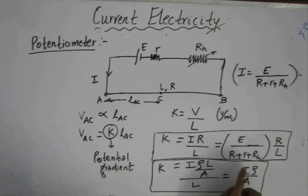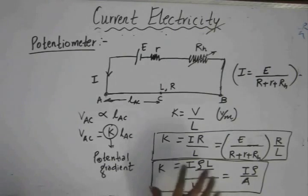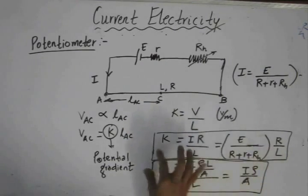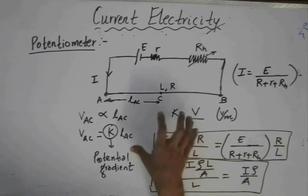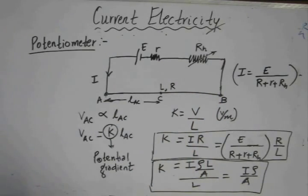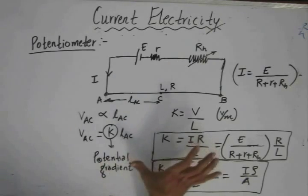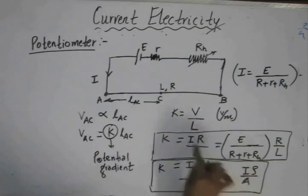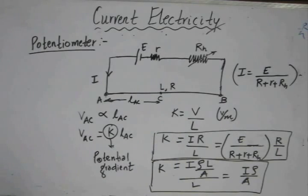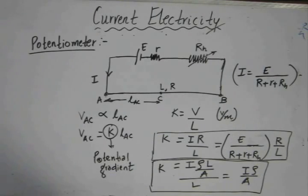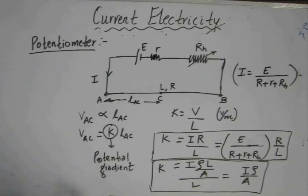From here we can see that the potential gradient depends upon the EMF of the cell and also on the internal resistance of the cell. The parameters on which the potential gradient depends are actually the parameters of the primary circuit. So if you want to change the potential gradient, you change the primary circuit parameters. We'll now do some examples on how to determine the value of the potential gradient.